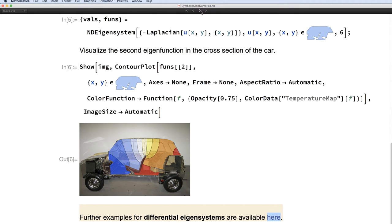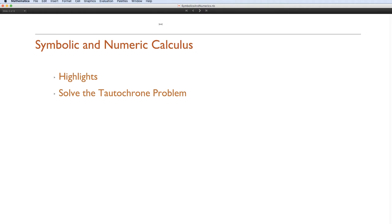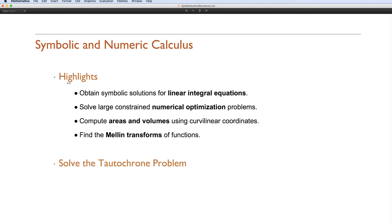I now go on to symbolic and numeric calculus. And over here, at least for me, one important feature is the solution of linear integral equations, which has been requested by Stephen Wolfram and many others over the years. We can also solve large numerical optimization problems using the IP opt library, which is now hooked up to find minimum. You can compute areas using curvilinear coordinates, not just Cartesian coordinates. And we have brand new functions for computing Mellon transforms of functions.